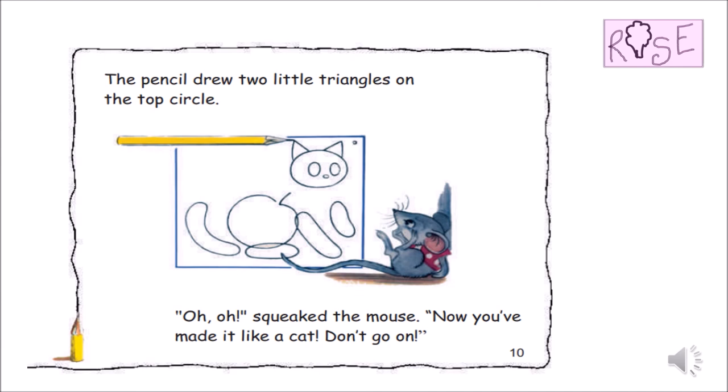The pencil drew two little triangles on the top circle. Oh-ho! Squeaked the mouse. Now you have made it like a cat. Don't go on.